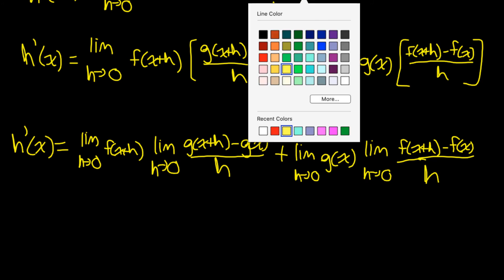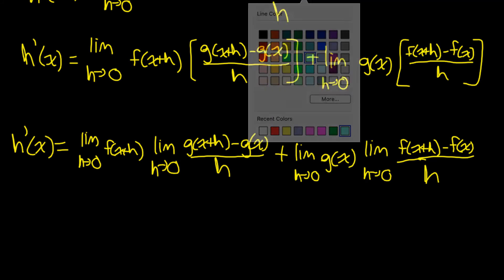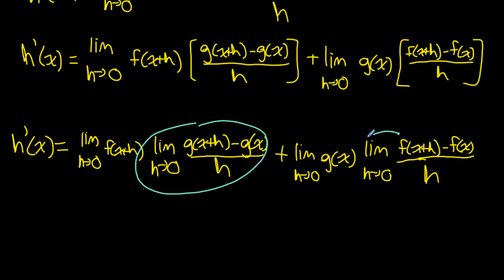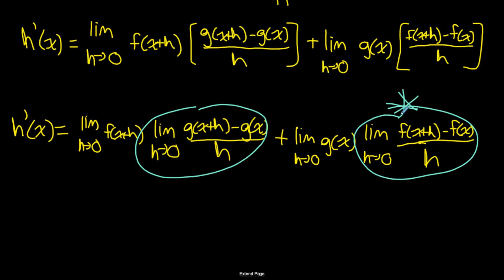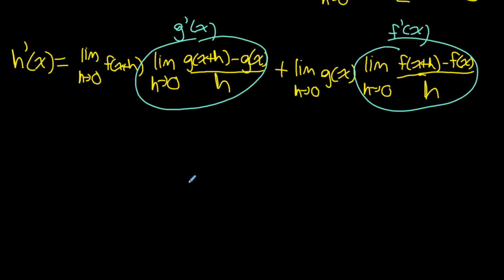Do you notice something really important? These expressions — [g(x+h) minus g(x)] over h and [f(x+h) minus f(x)] over h — are just the derivatives of g(x) and f(x) by Newton's quotient. So the limit of [g(x+h) minus g(x)] over h is g'(x), and the limit of [f(x+h) minus f(x)] over h is f'(x). That's the whole foundation of why we went through this process — to isolate those expressions.